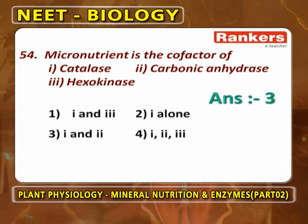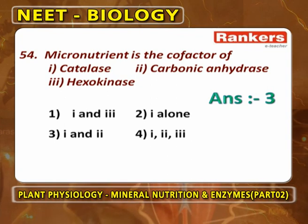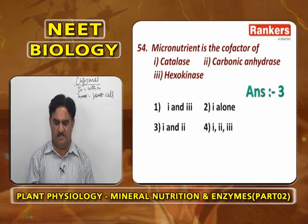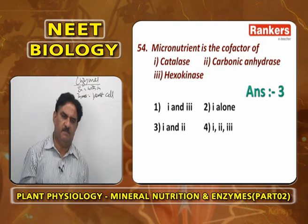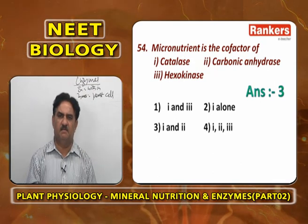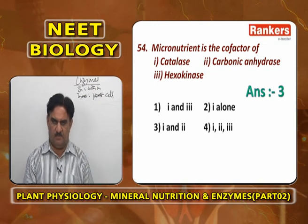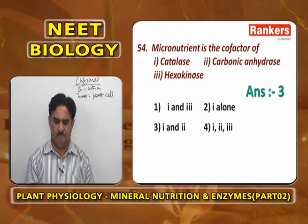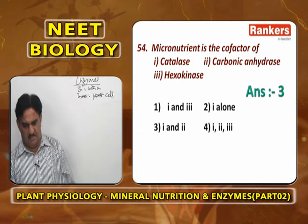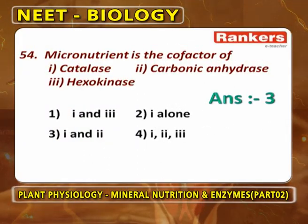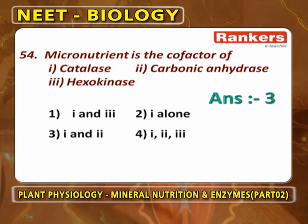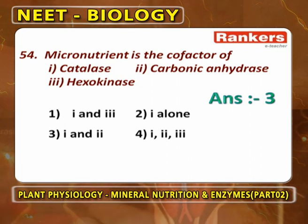Micronutrients are the cofactors of certain enzymes. Iron is a cofactor for catalase, and zinc is a cofactor for carbonic anhydrase — both iron and zinc are micronutrients. Hexokinase is activated by magnesium, but magnesium is a macronutrient, not a micronutrient. So micronutrients are cofactors of catalase and carbonic anhydrase — answer is 1 and 2.